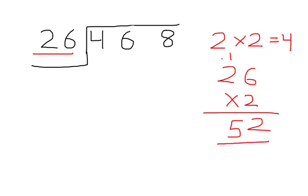Instead of multiplying 26 by 2, we should try multiplying it by 1. 26 multiplied by 1 equals 26, which can be subtracted from 46.